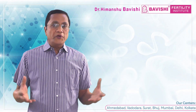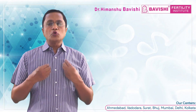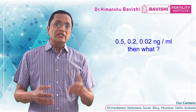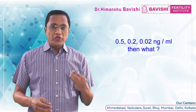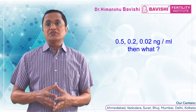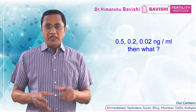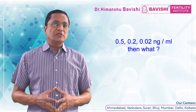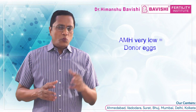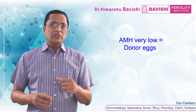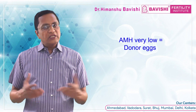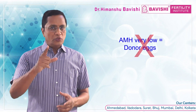In our practice, we see many patients where AMH is less than 0.5 — even 0.05, 0.03, or 0.01. In that situation, we consider it very very low. Now what does that mean? If AMH is very very low, does that mean there is no chance of pregnancy?